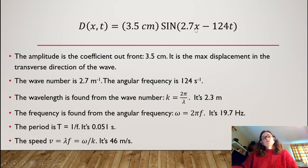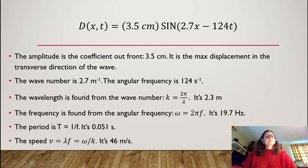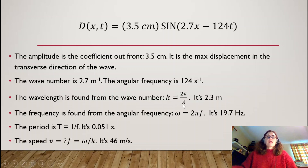Looking at sin(2.7x − 124t), the wave number is the coefficient multiplying x. So k = 2.7 inverse meters (since x is in meters, this keeps the argument dimensionless). The angular frequency is the coefficient multiplying t, so ω = 124 inverse seconds, assuming the form is sin(kx − ωt). We can find the wavelength from the wave number: k = 2π/λ, so 2.7 = 2π/λ, giving λ = 2π/2.7 ≈ 2.3 meters.